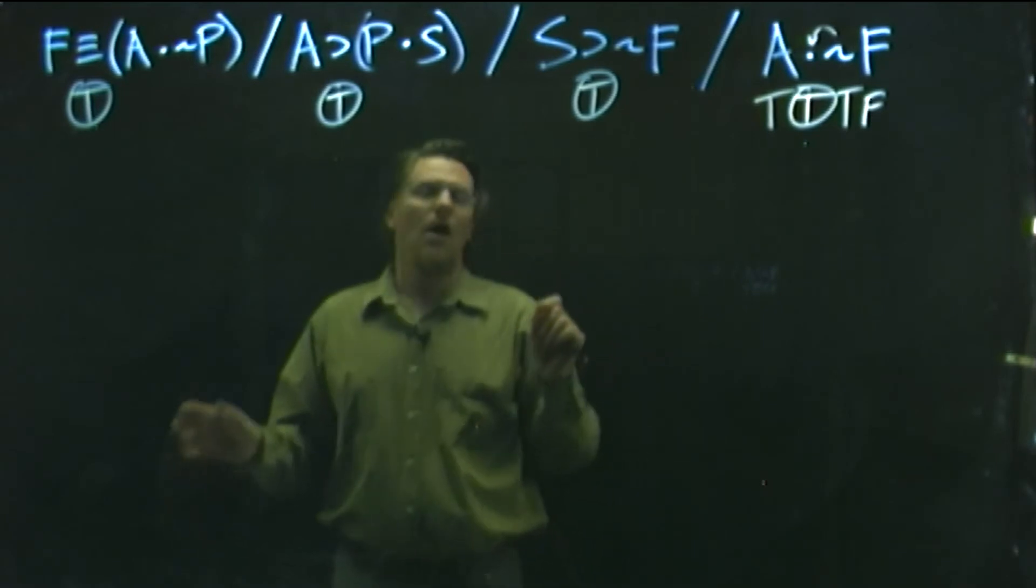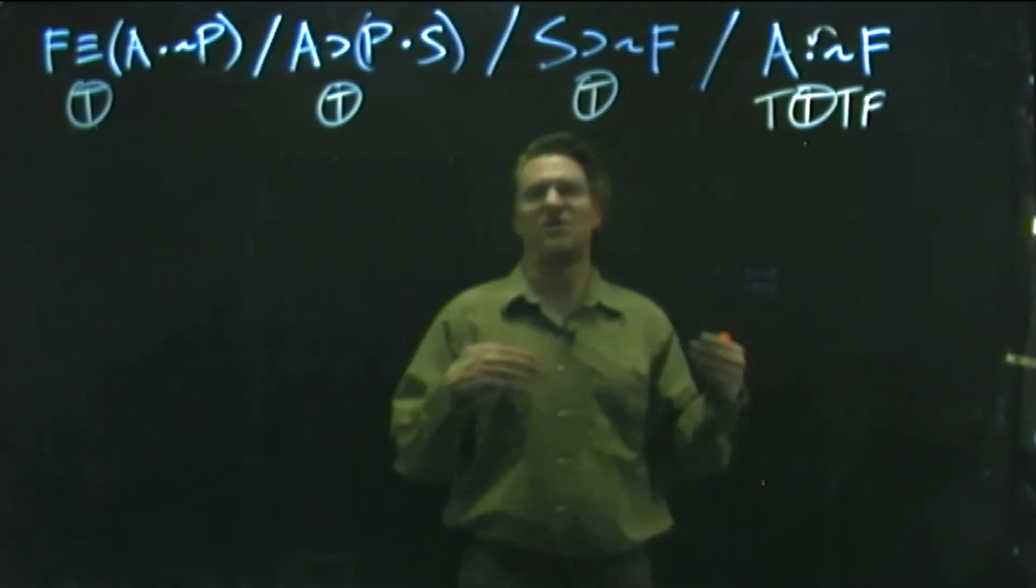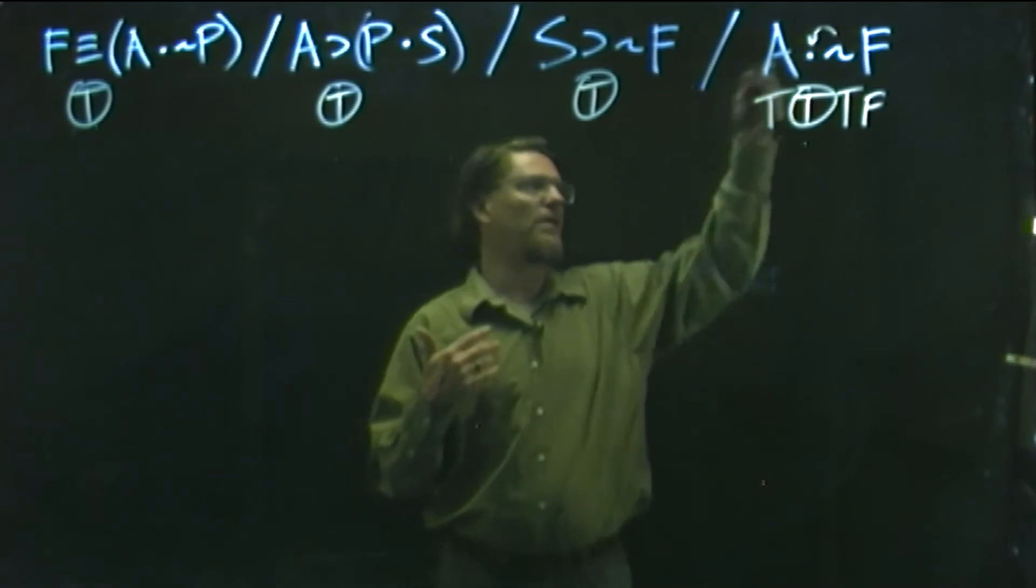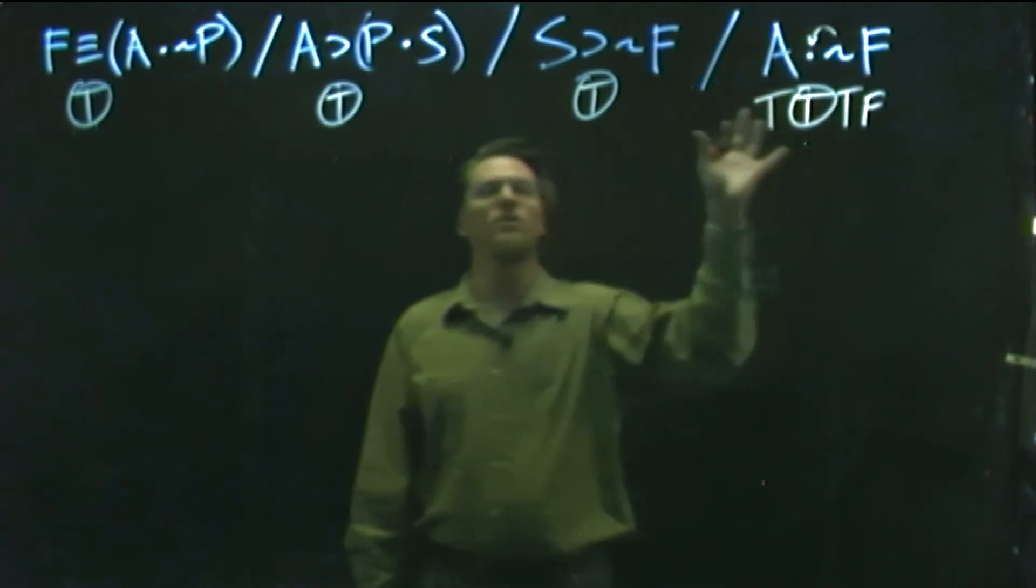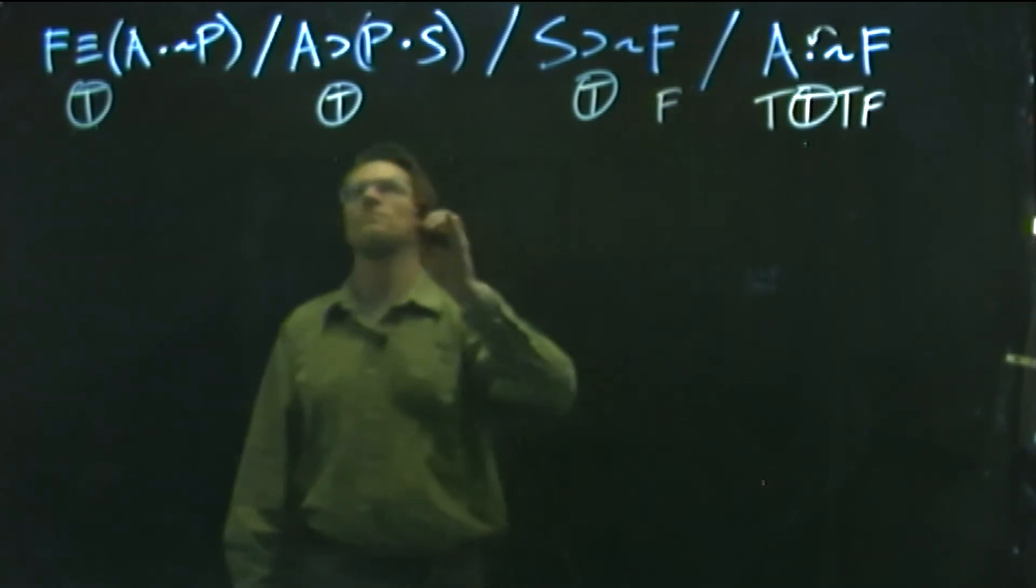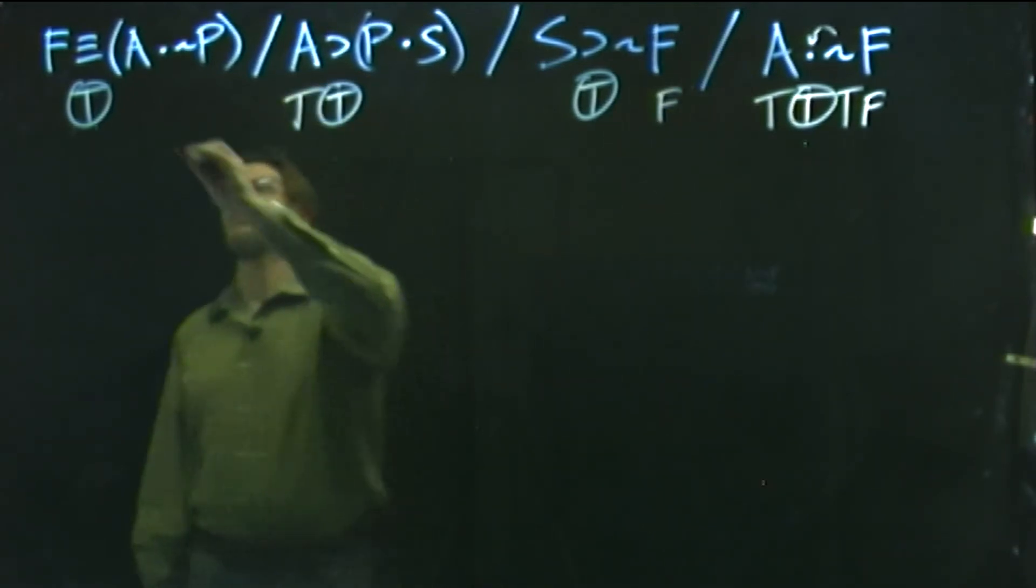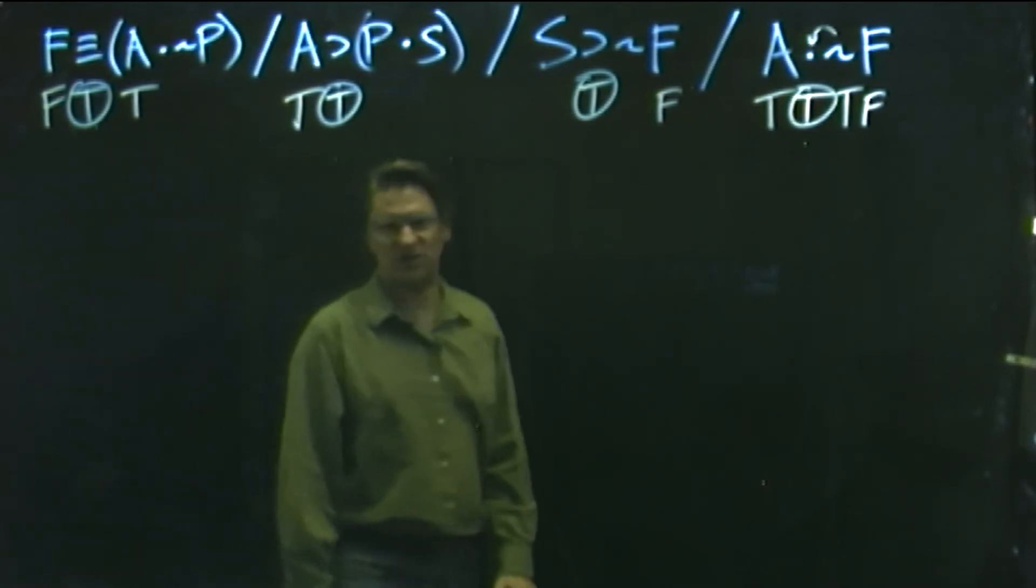And that's why you want to start there. Now, as the sheet says, if you don't have a statement with the dot as the main operator, you then want to start with the claim that can be made true in the least number of ways to make your life easier. So we made the dot true. We found out that A is true and F is false. And then as the instructions say on that sheet, then go ahead and plug those in where you find them. So in other words, F is false here, A is true, A is true, and F is false there.